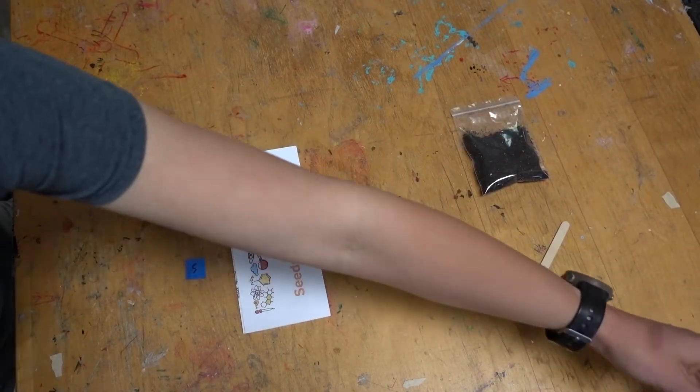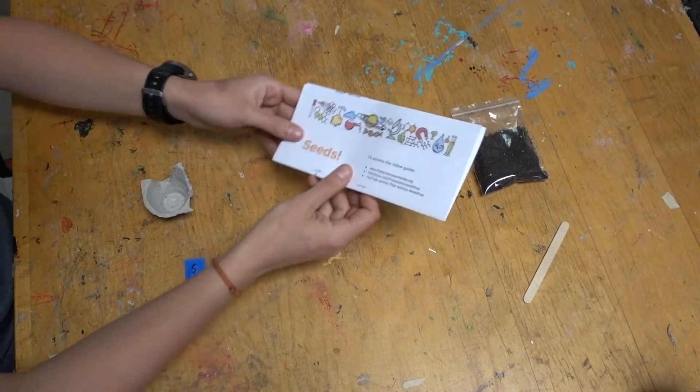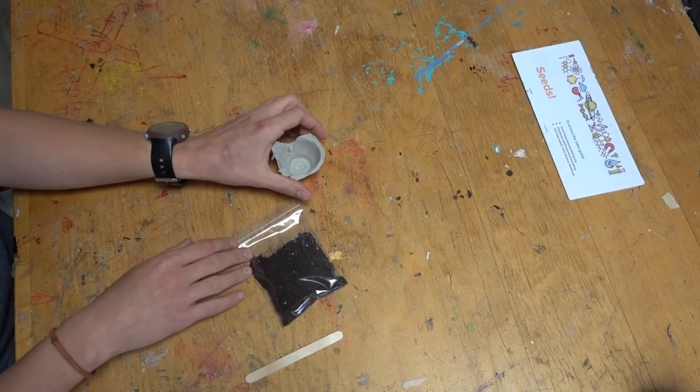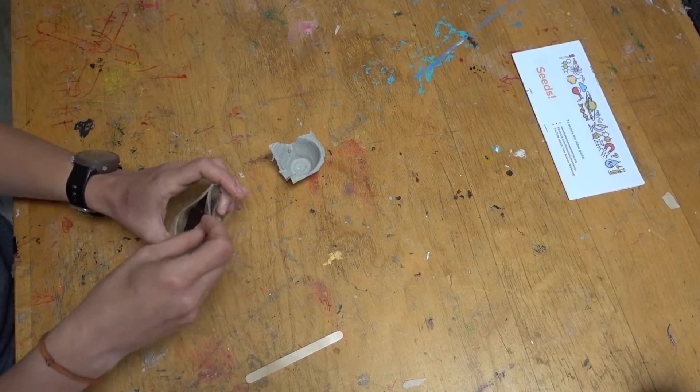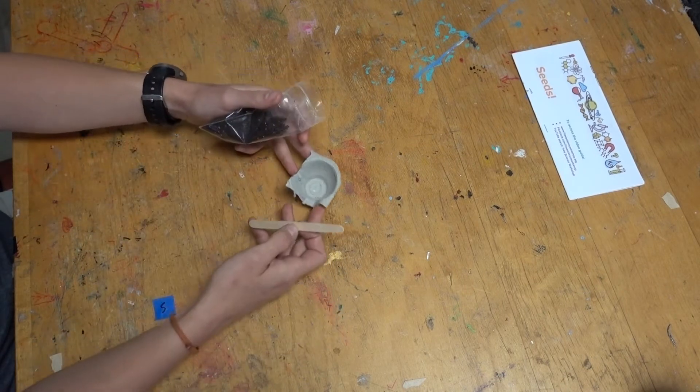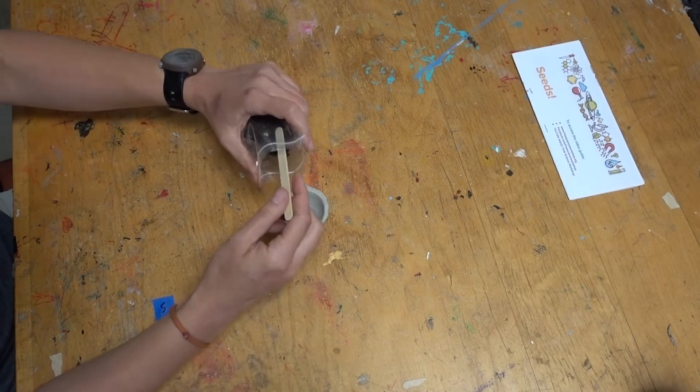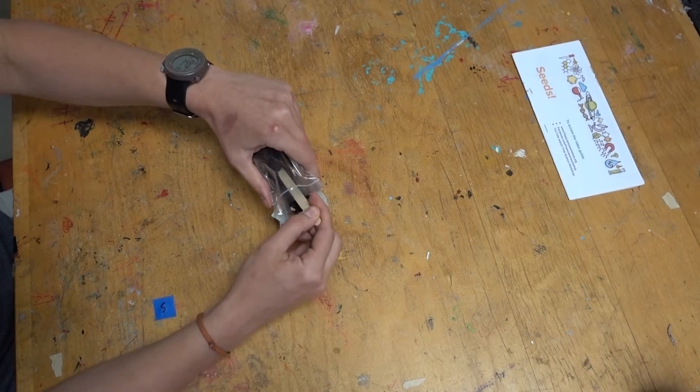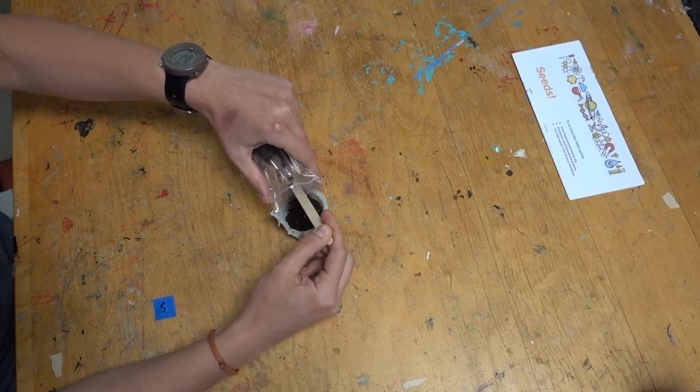Clearing out some space on your work table that you don't mind getting dirty, you're going to want to start with your little egg carton cup, your bag of potting soil, and if you don't want to get your fingers in the soil, you can use the popsicle stick. To make a nice little home for our seed, we're going to want to empty some of the potting soil into the egg carton cup. Not so much that it dumps everywhere, but enough that your egg carton is mostly full.